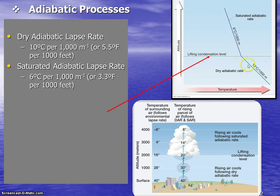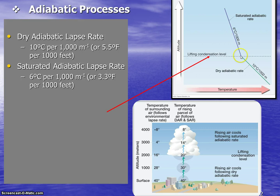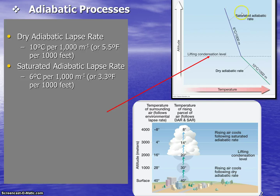Once you've reached the lifting condensation level, you change from using the dry adiabatic rate to the saturated adiabatic lapse rate, which is less than the dry rate at 6 degrees Celsius per 1000 meters — so saturated air cools more slowly than dry air. If we were at 20 degrees Celsius and the air rises another 1000 meters, we subtract 6 degrees to get 14 degrees Celsius at 2000 meters.